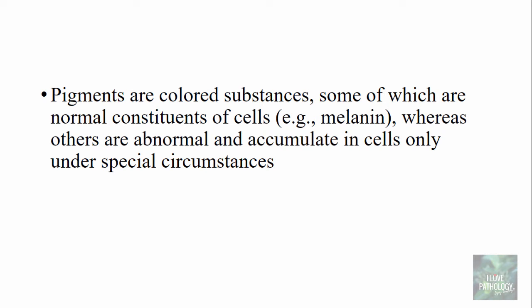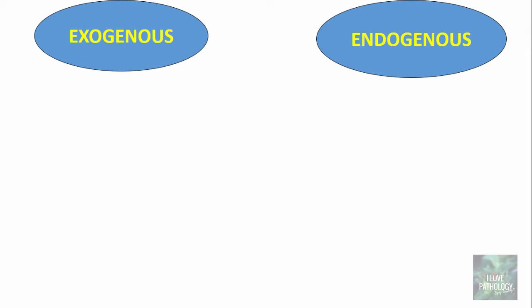What are pigments? Pigments are colored substances, some of which are normal constituents of cells — for example, melanin — while others are abnormal and can accumulate in cells only under special circumstances. These can be exogenous pigments or endogenous pigments.